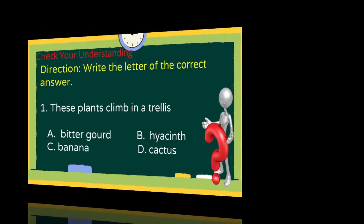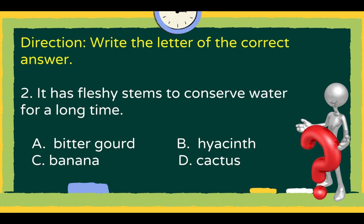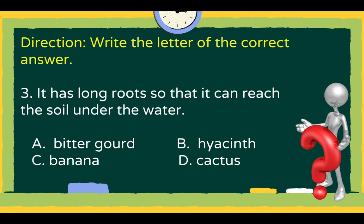Now, to check your understanding, write the letter of the correct answer. Number 1: This plant climbs on a trellis. A) bitter gourd, B) hyacinth, C) banana, or D) cactus. Number 2: It has fleshy stems to conserve water for a long time. A) bitter gourd, B) hyacinth, C) banana, or D) cactus. Number 3: It has long roots so that it can reach the soil under the water. A) bitter gourd, B) hyacinth, C) banana, or D) cactus.